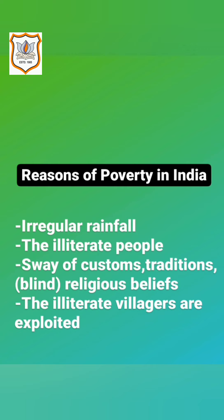The next reason behind poverty in India is exploitation of illiterate villagers. These villagers are exploited by landlords and moneylenders. The illiterate villagers are unable to derive their benefits as they do not possess information about the welfare schemes declared by the Government of India.